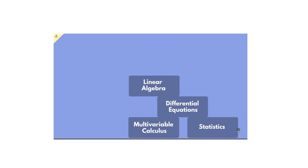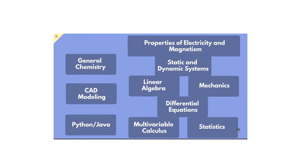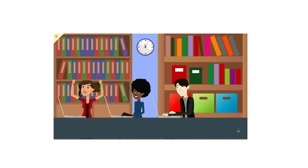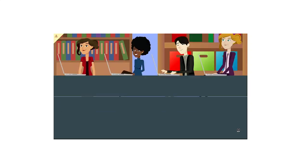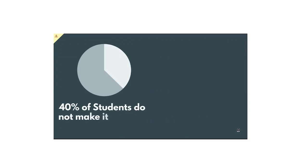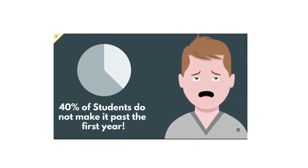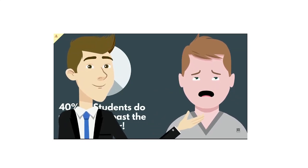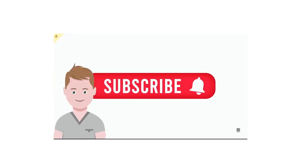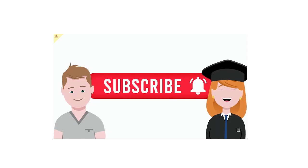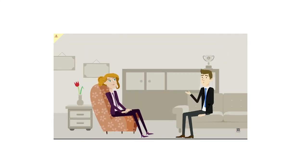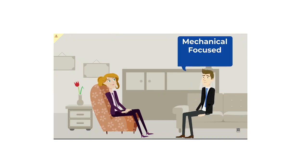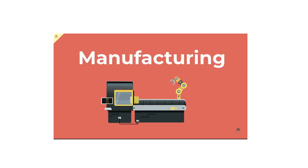The degree starts with standard math, physics, software, and chemistry courses to build a base. Once you get through this first stage, give yourself a pat on the back, because a whopping 40% of engineering students do not make it past this dreaded first year. Once you finish that first year, you'll move closer to more exciting mechanical-focused courses, starting with manufacturing.